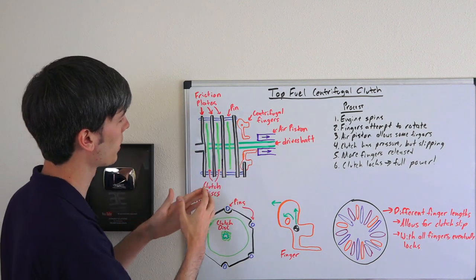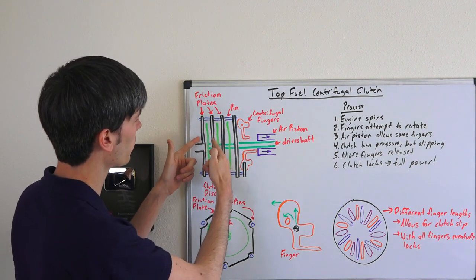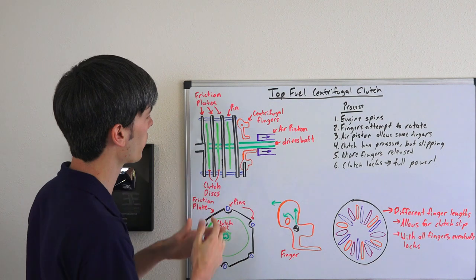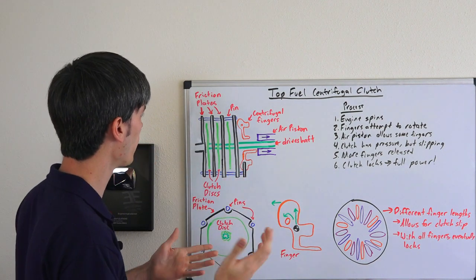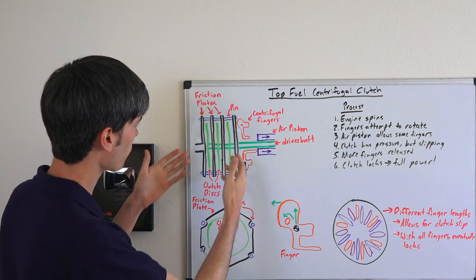Here we have a multi-plate clutch. You've got the alternating friction plates and clutch discs. It works very similar to the multi-plate clutch that I explained in my other video in the description, and you have these pins locking these friction plates.